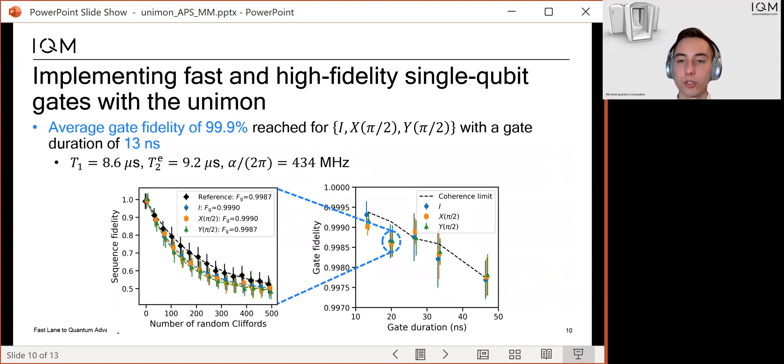Finally, I will show you that it is possible to implement fast and high fidelity single qubit gates with the Unimons. We studied this with one of the qubits, and the qubit had a T1 and T2 of approximately 10 microseconds.